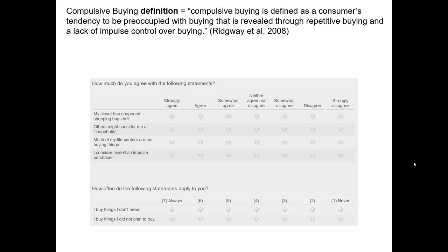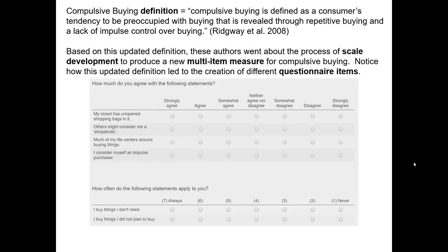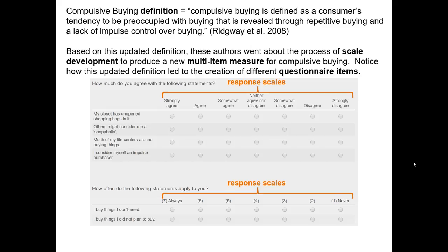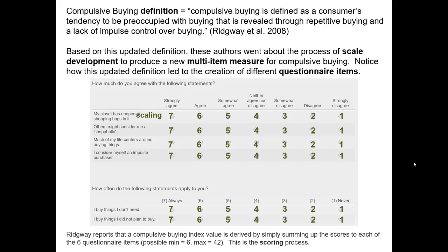This should underscore just how important it is to properly define the way you're characterizing your subjective property. Here we see the response scales associated with Ridgeway's new measures in this six-item, multi-item scale. First, there are four seven-point agreement scales, and below there are two seven-point subjective frequency scales, with only the edge anchors of always and never being labeled. Ridgeway's scaling was similar to the approach used by Faber and O'Quinn, except since they have seven different points, they use a seven-point scoring system.